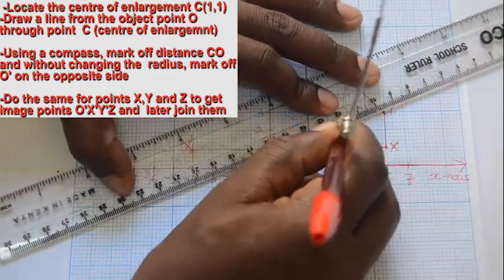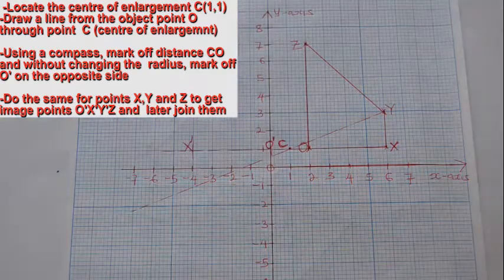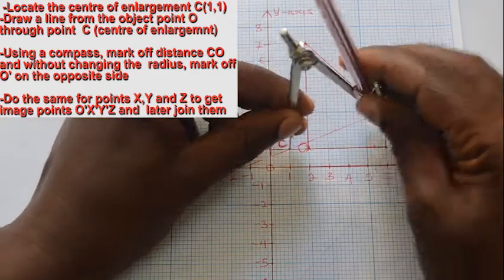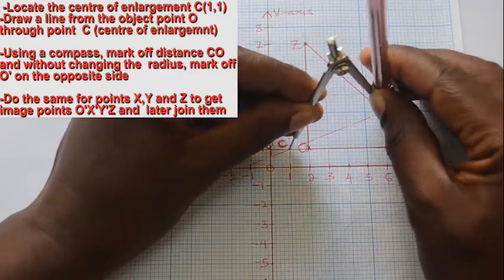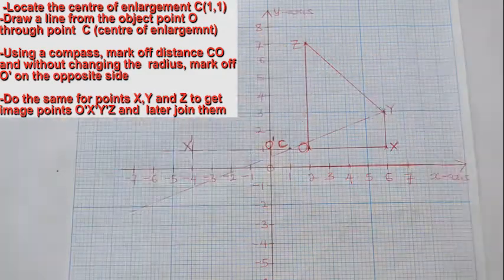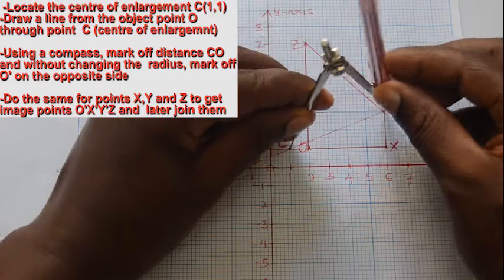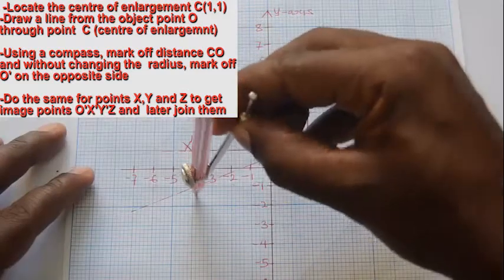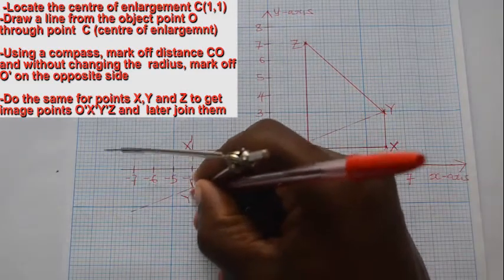We then repeat the procedure for points Y and Z to get the remaining image points Y prime and Z prime.